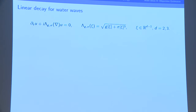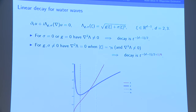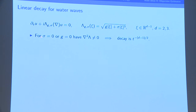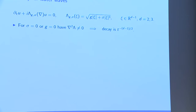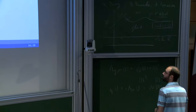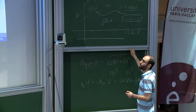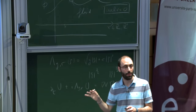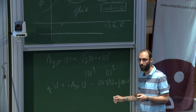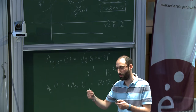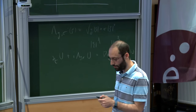What happens in the water waves cases? If you have one of the two sigma or g equal to zero, the dispersion relation is non-degenerate — non-vanishing Hessian — and you get the full decay t^{-d/2}, where d-1 is the dimension of x. But if both of them are non-zero, you have an inflection point — call this sphere of inflection point gamma_0. The group velocity has a minimum at gamma_0, and therefore you lose a factor of t^{-1/6} in decay, similar to kdV compared to Schrödinger.